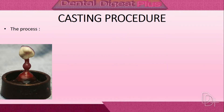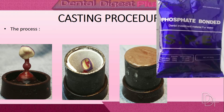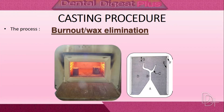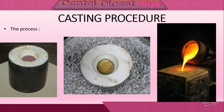This process consists of surrounding the wax pattern with a heat-resistant investment material, after which elimination of the wax is done by heating the casting ring in the oven, and then introducing the molten metal into the mold through a channel called sprue.